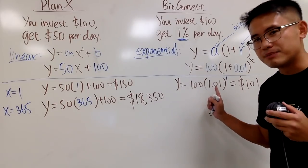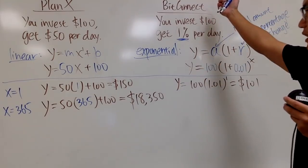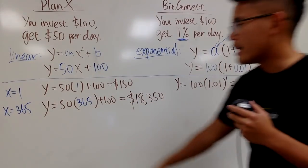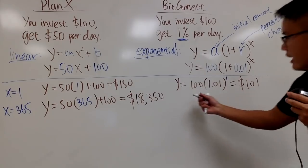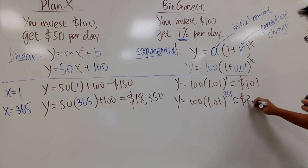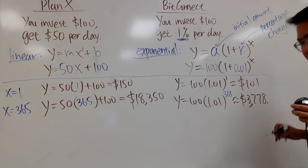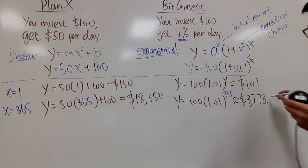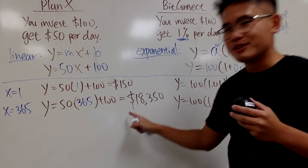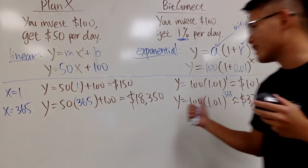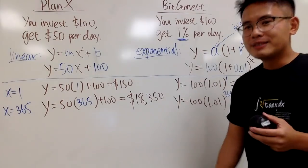Now, let's see if the exponential one, if BitConnect can do any better than that. So I will just have to plug in 365 into this x. You end up with $3,778.34. The comma is right here. And you have some cents. 34 cents. Don't get me wrong. This is still good. But I will take this all day long compared to that.